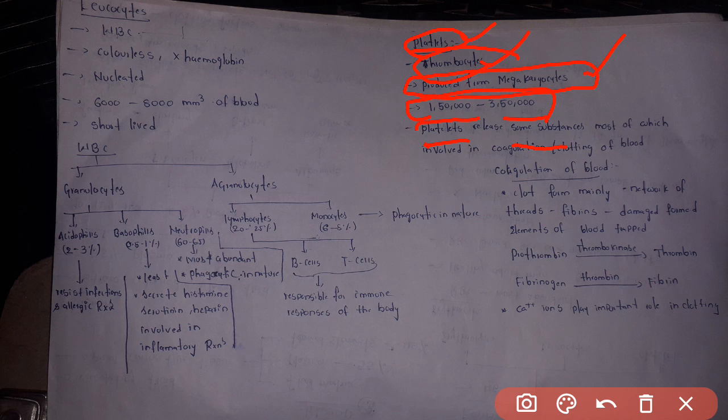Platelets release some substances, most of which are involved in coagulating or clotting of blood. When these platelets are released, they help form blood clots to stop the blood flow from a wound.